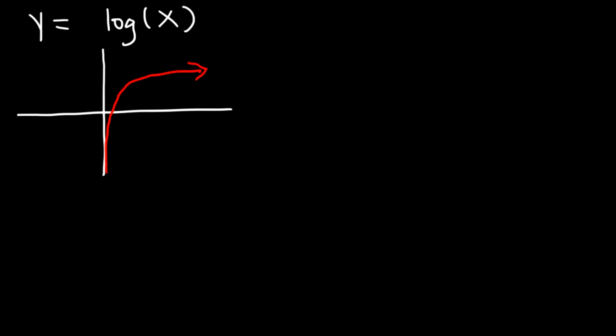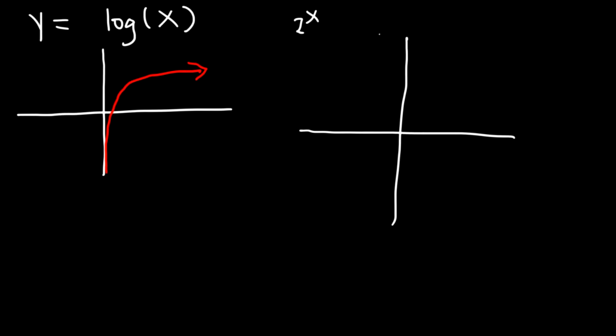Logarithmic functions are basically the inverse of an exponential function. Exponential functions contain a horizontal asymptote. Logarithmic functions contain a vertical asymptote. Exponential functions increase at an increasing rate. Logarithmic functions increase at a decreasing rate. So let's say if we were to put 2 to the x and log base 2 of x on the same graph.